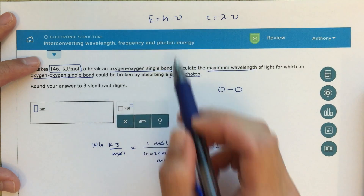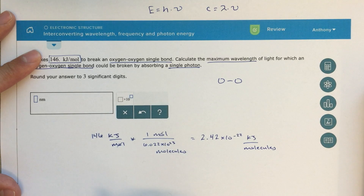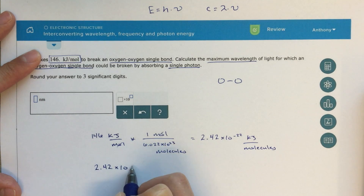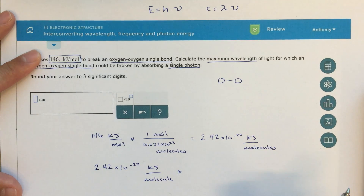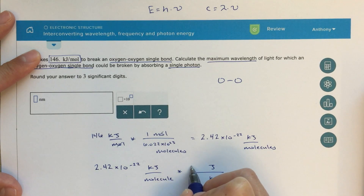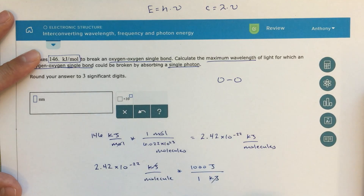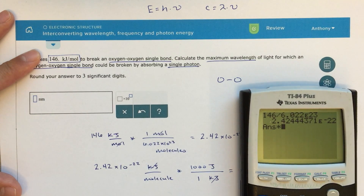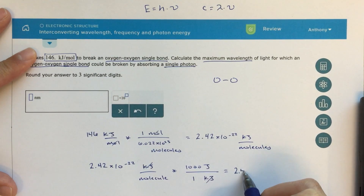Since E equals Planck's constant times frequency uses joules, I need to convert kilojoules per molecule into joules. Taking 2.42 times 10 to the minus 22nd kilojoules per molecule and multiplying by the conversion factor — 1000 joules per kilojoule — the kilojoule units cancel, giving me 2.42 times 10 to the minus 19th joules per molecule. This is the energy the photon needs in order to break this one bond.